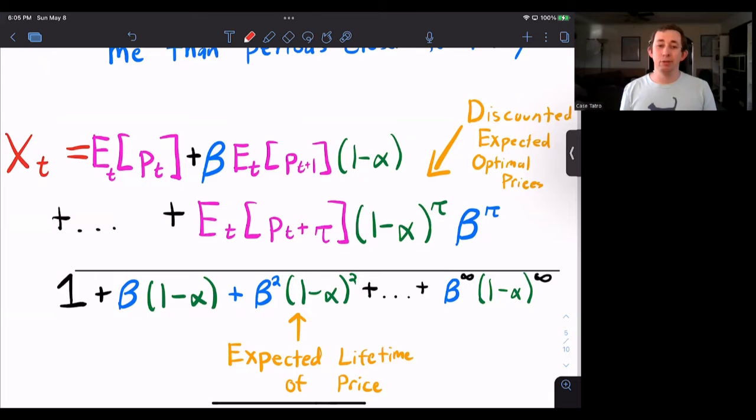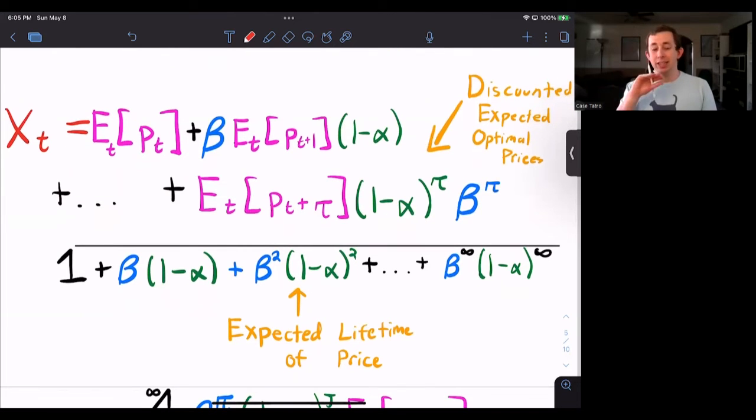The price levels in the infinite future times the probability that I can't set my price into the infinite future, which is one minus alpha to the T times beta to the T, which is my time discount factor. That entire thing is going to be divided by the expected lifetime of my price, which just one plus beta times one minus alpha plus beta squared times one minus alpha all the way into the infinite future.